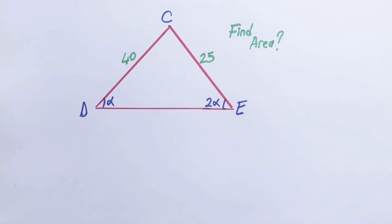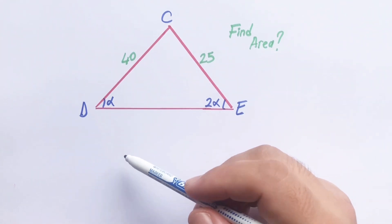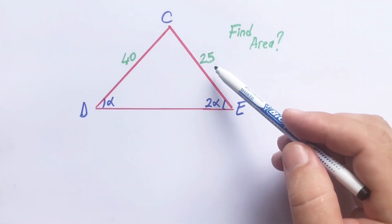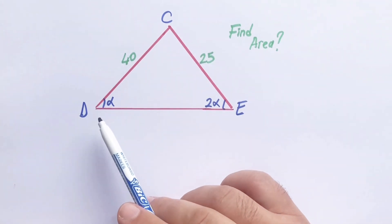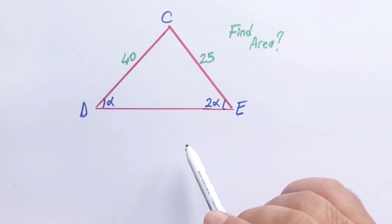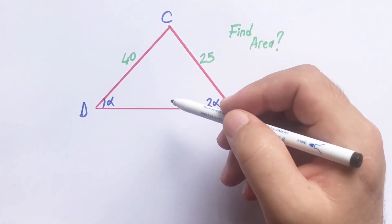Hello everyone. In this video, we will calculate the trapezoid area using two different methods. DC is 40 units and CE is 25 units, the base angles ratio is 2, and the area is asked.